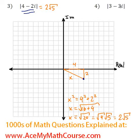What about the absolute value of 3 minus 3i? Where's that going to be? So 3 units this way and 3 units down.